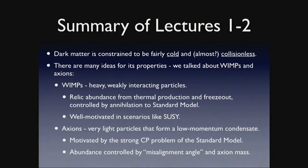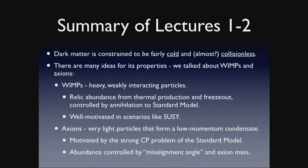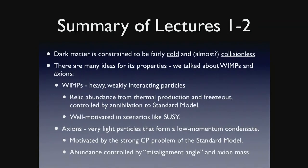Just to summarize what we talked about yesterday: from various probes, we know that dark matter is there, that it's fairly cold, that it's collisionless or almost so. We talked about WIMPs, which are heavy and weakly interacting, and their relic abundance is determined by thermal freeze-out, controlled by their annihilation rate to the standard model. And we talked about axions, which are instead very light. They form a cold, low-momentum condensate. Their abundance is controlled by the initial condition of misalignment angle as well as their mass, which also controls their couplings into the standard model.